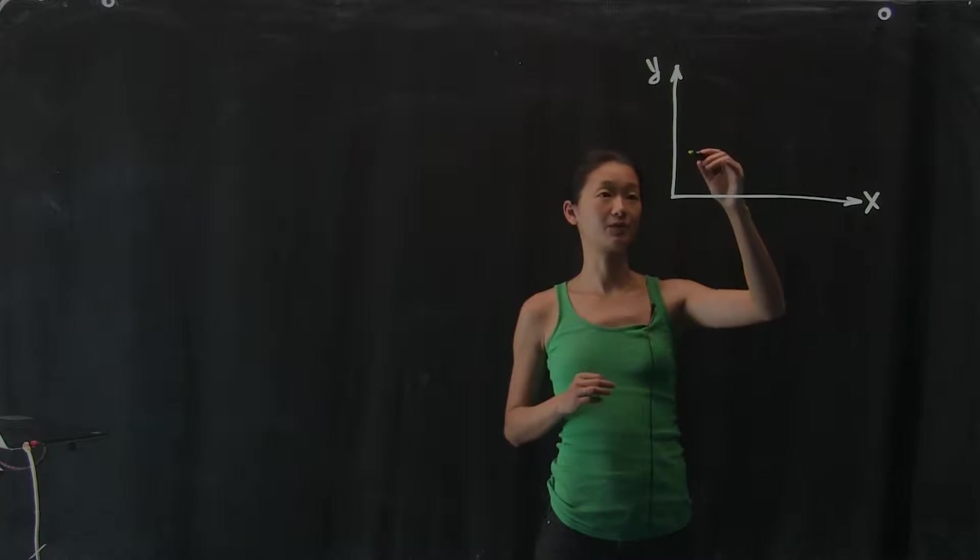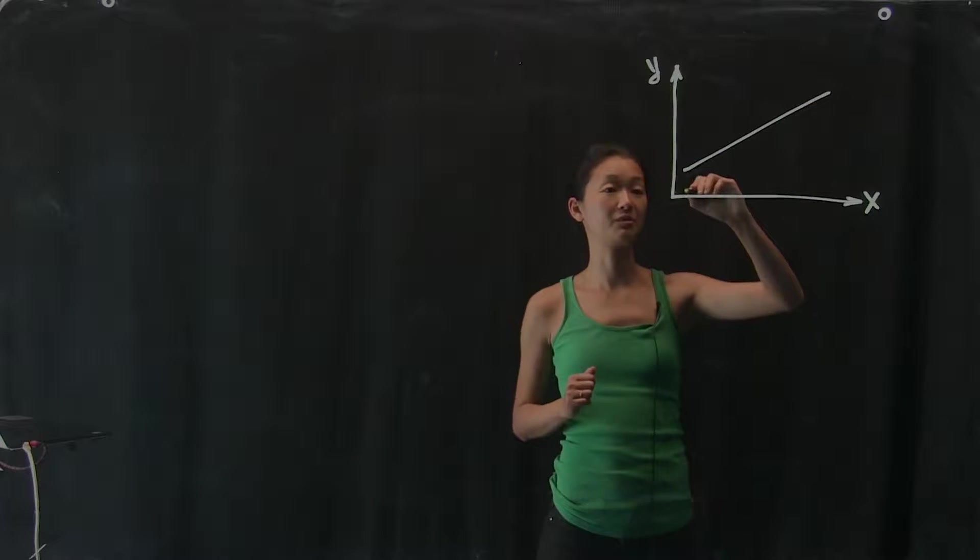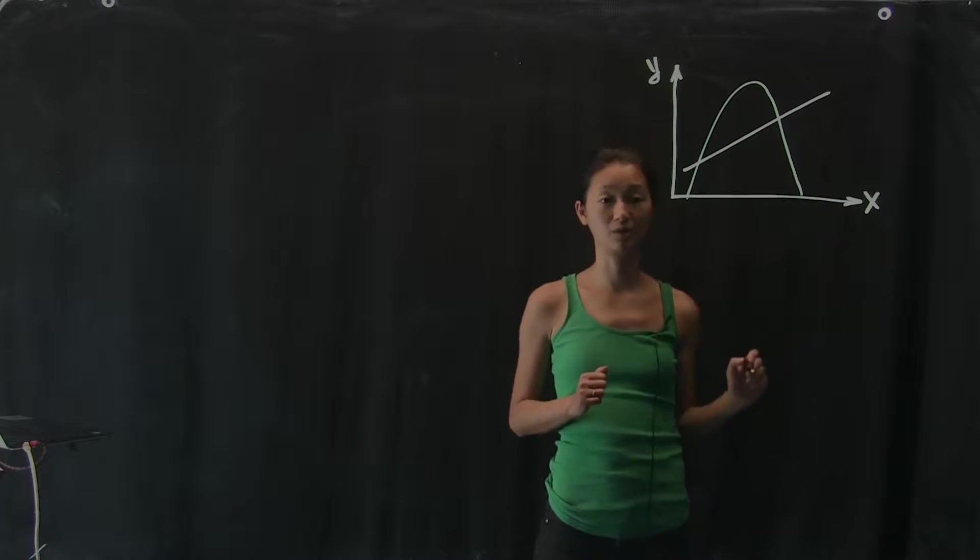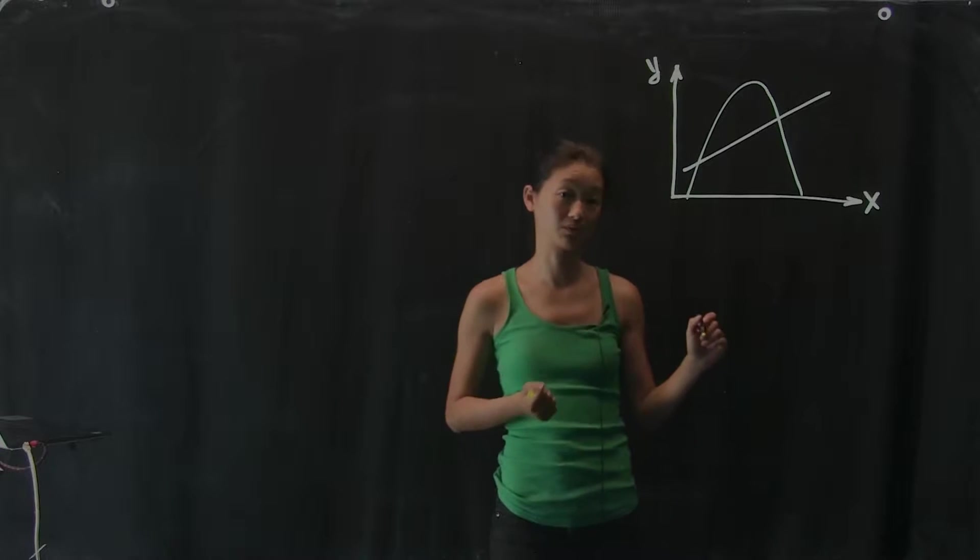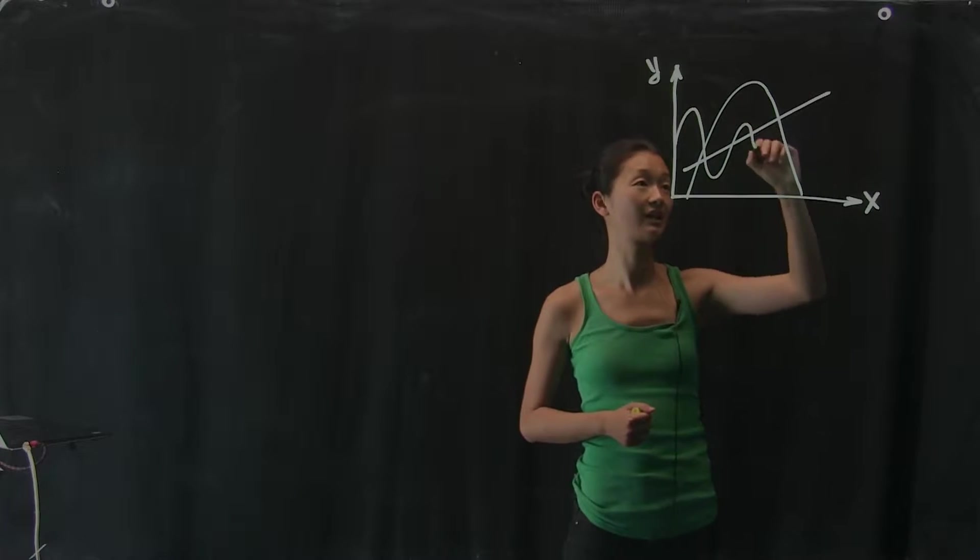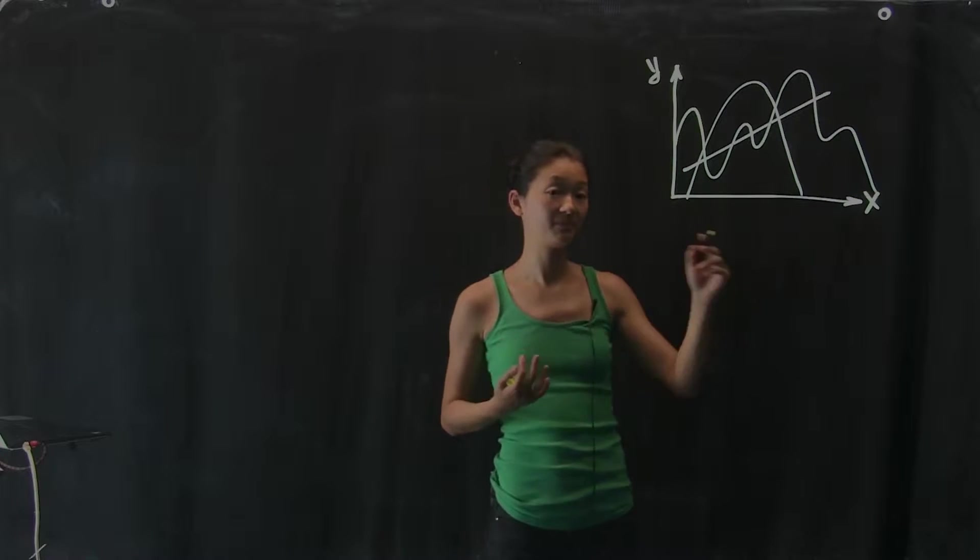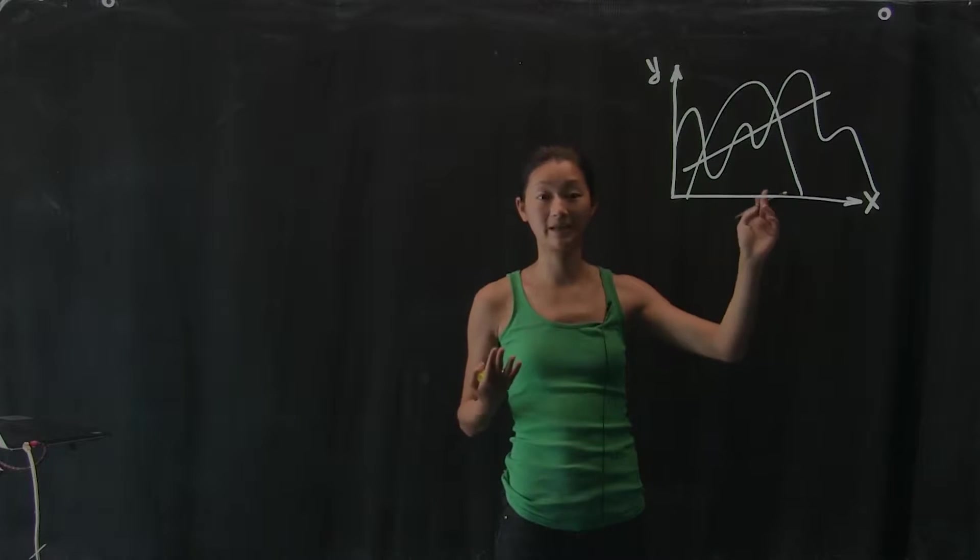For example, what do I mean by shape? Well, shape could be a line, so linear regression. A shape could be a parabola, so this would be a quadratic regression. A shape could be something else that's kind of squiggly, kind of like this. A shape could be something that is spiky or complicated.